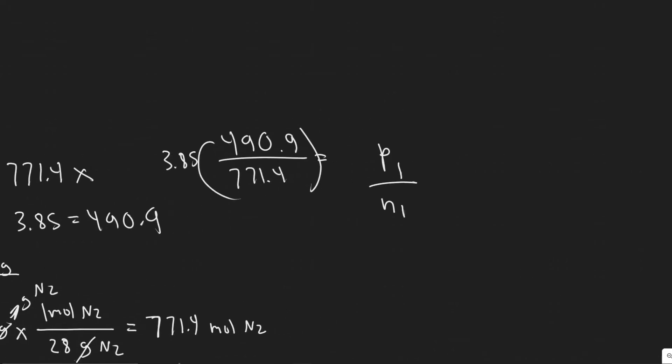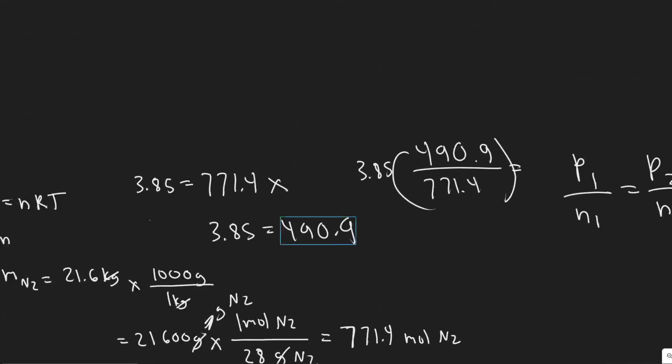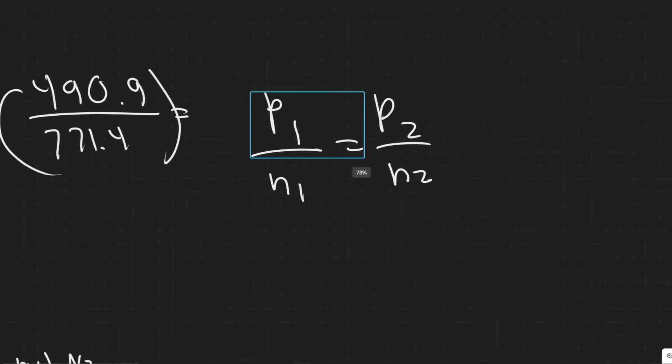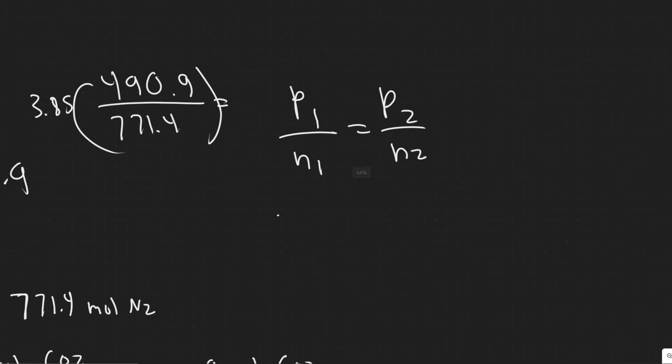Which basically the pressure P1 over n1 equals P2 over n2. So this is a formula you can use assuming that temperature and the volume is constant. So P1 is the pressure 3.85 divided by the number of moles, which is 771.4, equals our new pressure divided by 490.9.